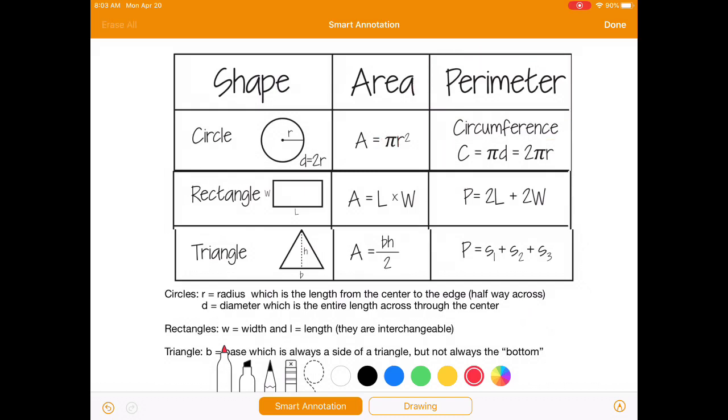For rectangles, the length and the width are the two sides of the rectangle. So W stands for width, L stands for length, but they are interchangeable. It's okay if you wanted to use this side for the length and this side for the width. That's perfectly fine.